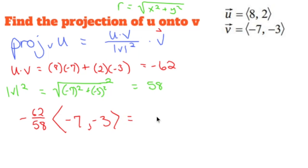Negative 62 over 58 actually simplifies to negative 31 over 29. How about that? Who would have known?